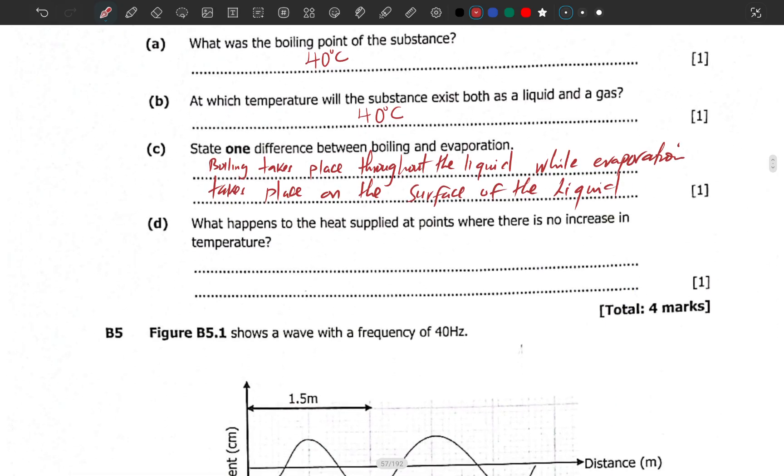What happens to the heat supplied at points where there is no increase in temperature? What happens to the heat supplied at these points? These points can be melting point or boiling points where there is no increase in temperature. Now the heat that is supplied at those points, let's say there is a solid here changing to liquid, when you supply heat to this solid, what you are doing is that you are trying to break down or to loosen the intermolecular forces.